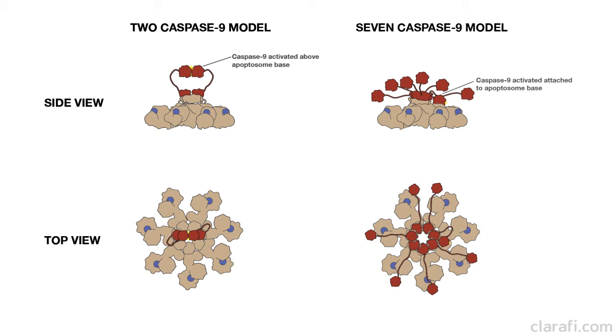In this model, only one caspase 9 catalytic domain docks to the base of the apoptosome at a time, while the other nine catalytic domains are tethered to the apoptosome but are able to move around freely.